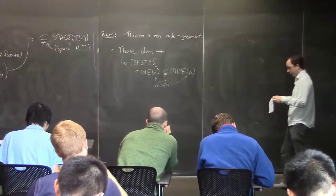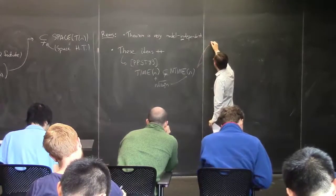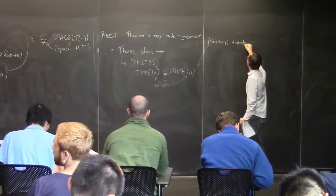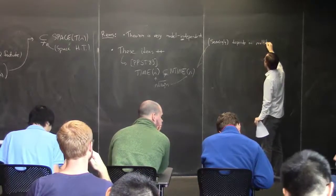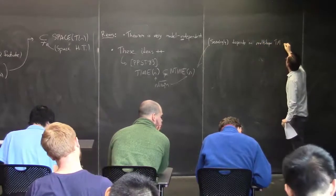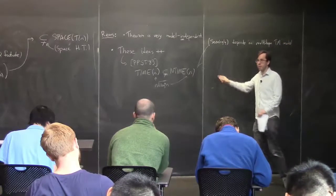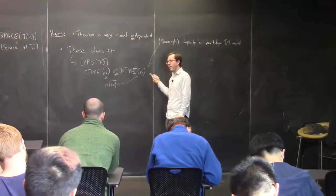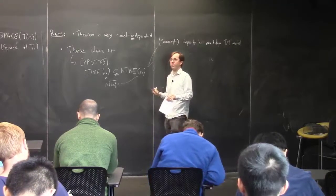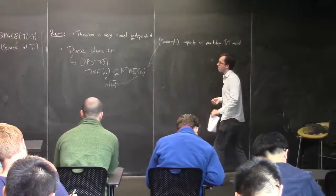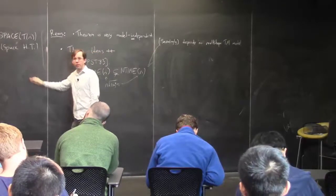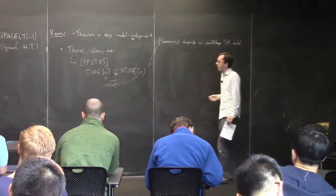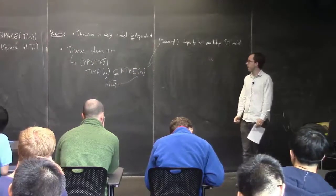The last thing about the PPST result: it's cool, but it seemingly depends on the multi-tape Turing machine model, in the sense that we don't know how to prove it for pointer machines or random access Turing machines. So it could be that the proof is really exploiting quirks of the multi-tape model in a way that the HPV theorem isn't — because we know how to prove HPV for several other models. So we're more confident HPV is a true fact about computation.